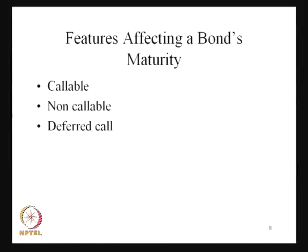Then there are the features which basically affect the bond's maturity — why the term to maturity of this particular bond and how this particular term to maturity will be different from bond to bond. On the basis of the characteristics of the bond, sometimes the maturity changes. If you observe here, we have a callable bond, we have a non-callable bond, and we have a deferred call bond. Whenever you talk about the callable bond, it basically means that at any time the bond can be called by the bond issuer — there is redemption of the particular bond possible at any time of the investment. But the non-callable bond — this particular bond cannot be redeemed; it cannot be recalled back before the term to maturity.